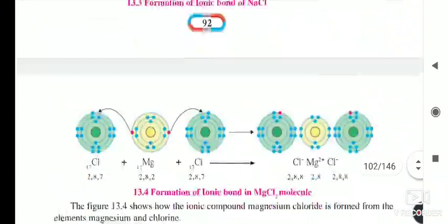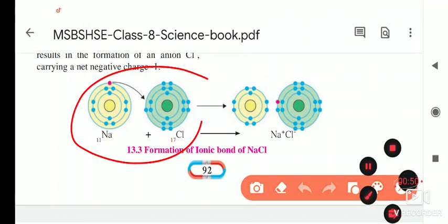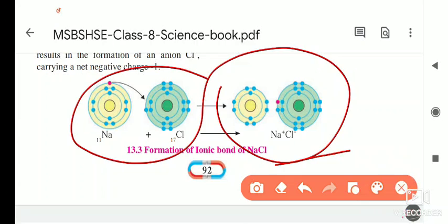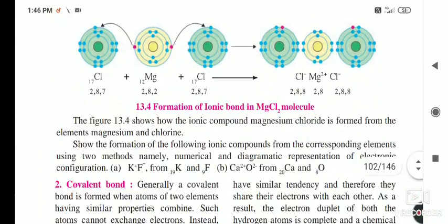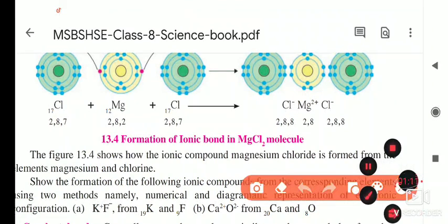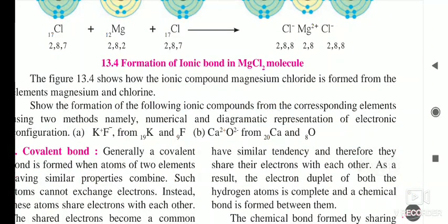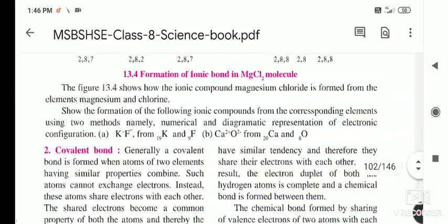I have shown you how sodium chloride is formed by donating and receiving electrons — sodium donates one electron and chlorine receives it, forming sodium chloride. Similarly, I told you how the magnesium chloride bond is formed, and I gave you homework on how bonds in potassium chloride and calcium oxide are formed.